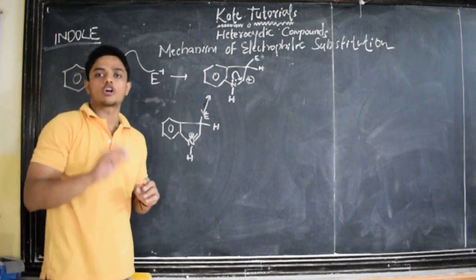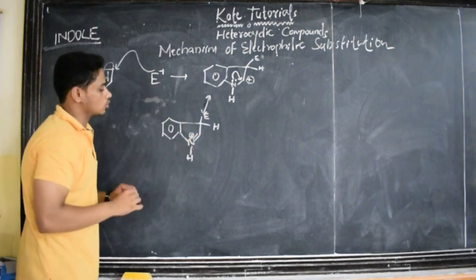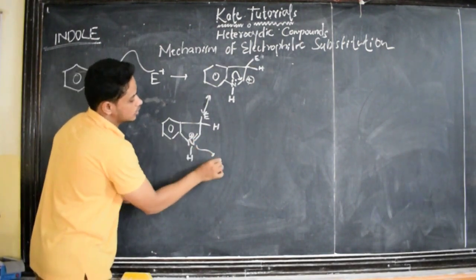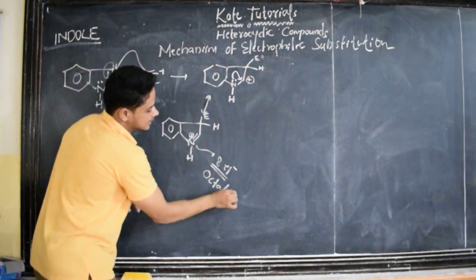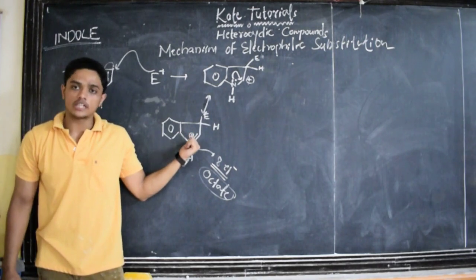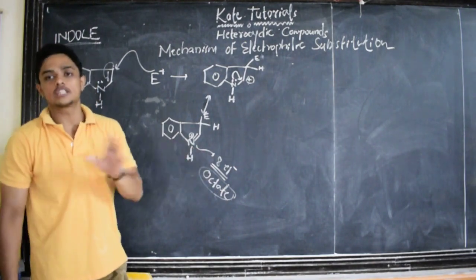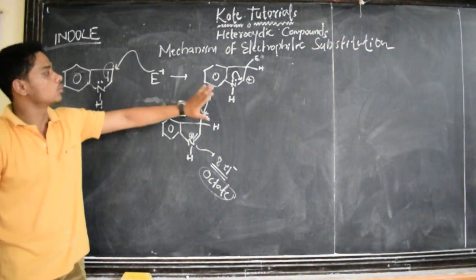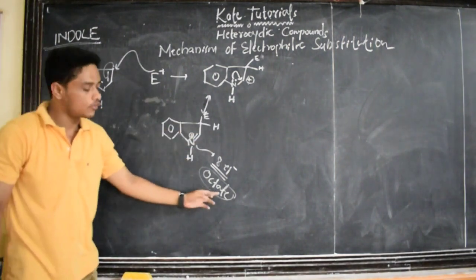It is because of the octet rule. This is nitrogen — it has one sigma bond, one sigma bond, one pi bond, and one more sigma bond. Totally two, four, six, eight electrons. Since this nitrogen has eight electrons, it satisfies the octet. Since it satisfies the octet, even though it may be electronegative and carries a positive charge, it has eight electrons and satisfies the octet rule. So, it is more stable.